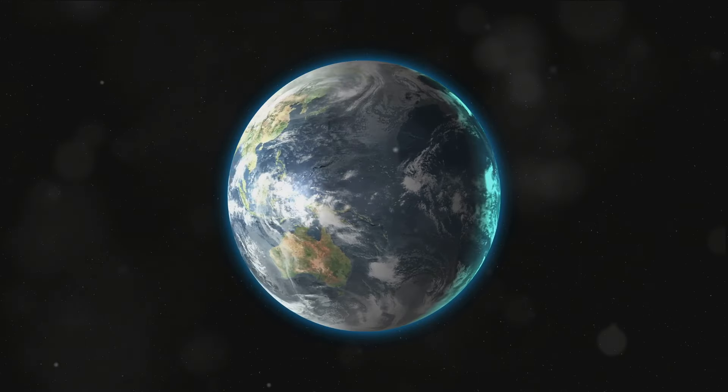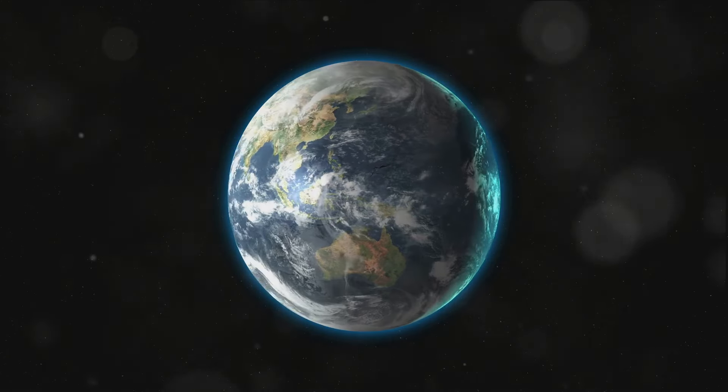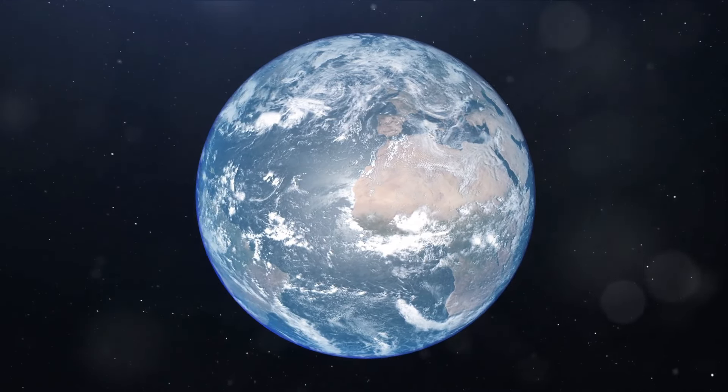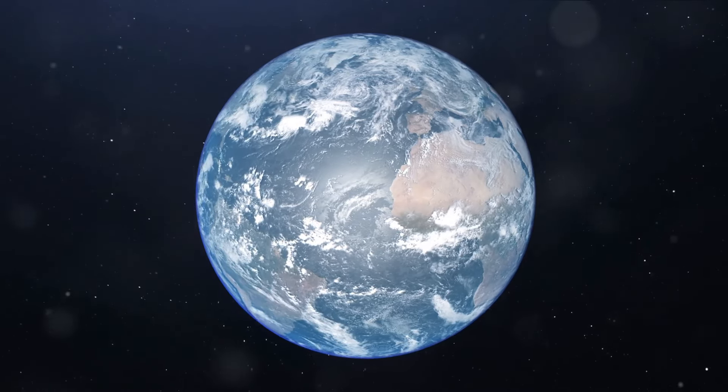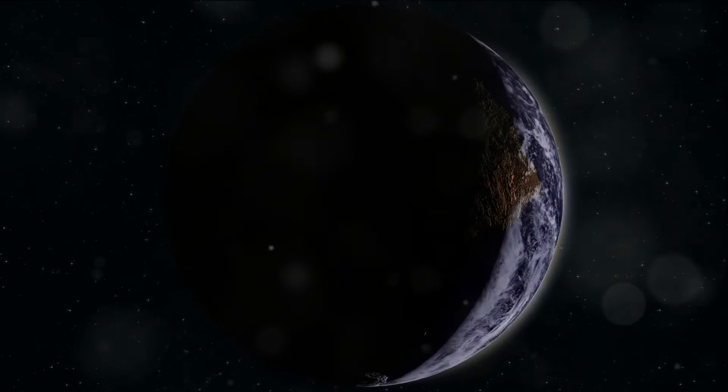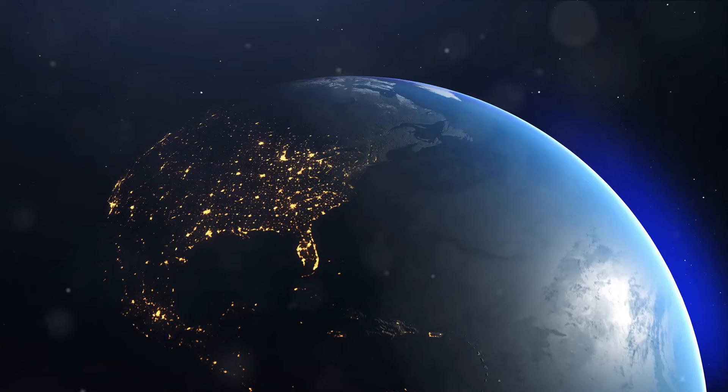Now hold onto your seats as we delve into the fascinating world of our rotating Earth. Imagine a line passing through the North and South Poles. That's Earth's axis. If you're wondering what this imaginary line has to do with anything, let me assure you it's pretty crucial. This axis is like the invisible spindle around which our planet performs a graceful pirouette, a dance we know as rotation.